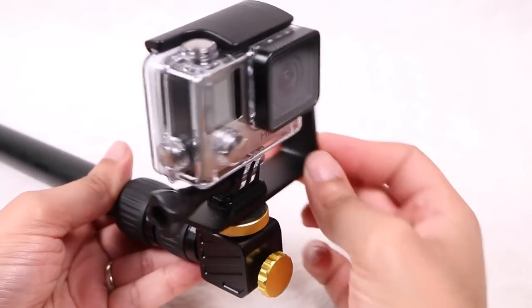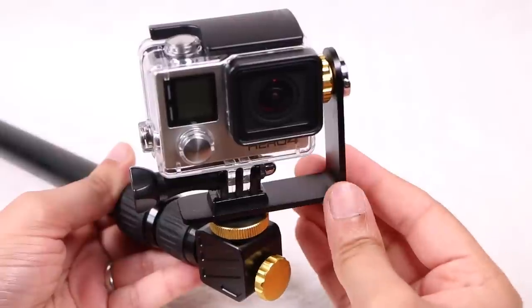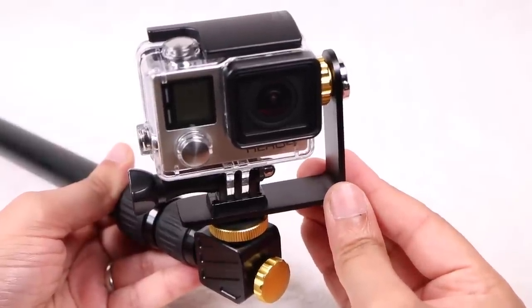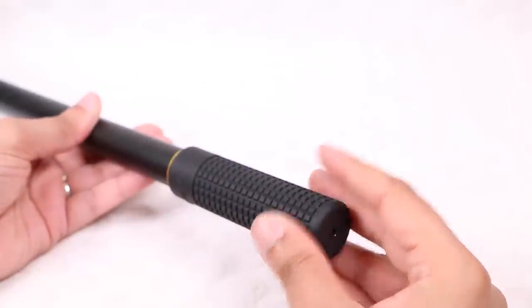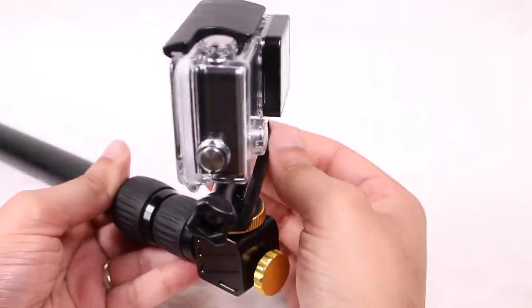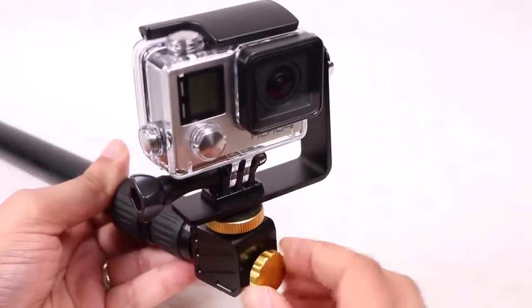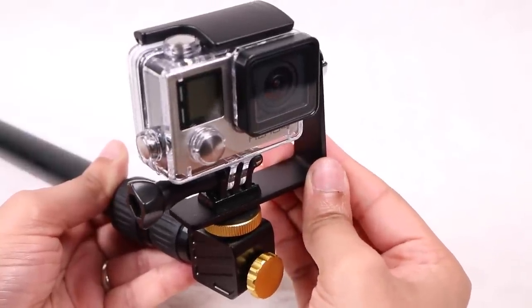At any time when a pan or tilt motion is not required, turning the gold locking screw will lock the camera into position. Although note that users should be careful not to forcefully rotate the handle with the locking screw in position, since this could damage the internal mechanism. Hence it's a good idea to always check the locking nut is loosened before operating a pan or tilt motion.